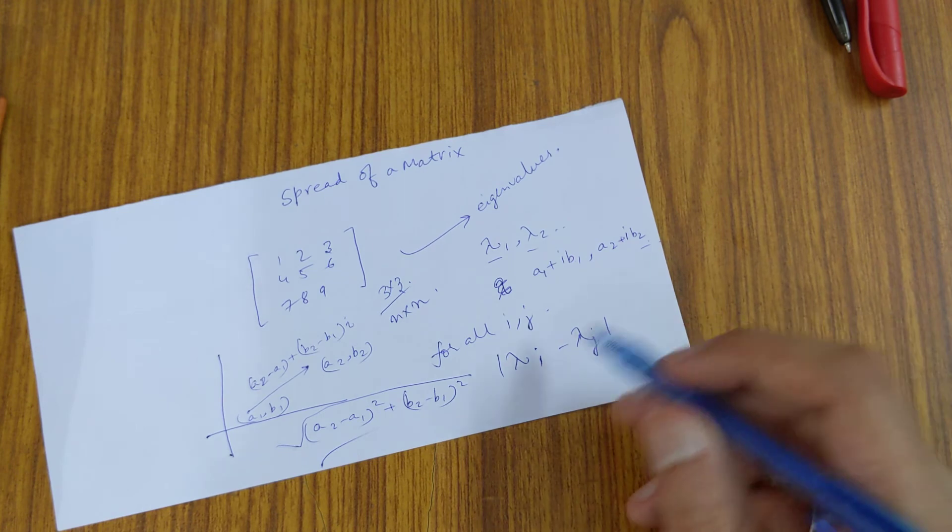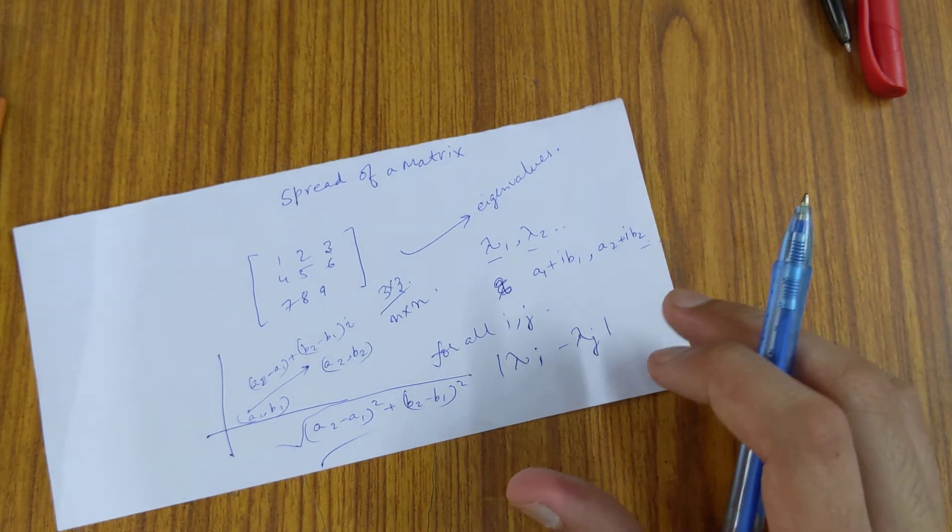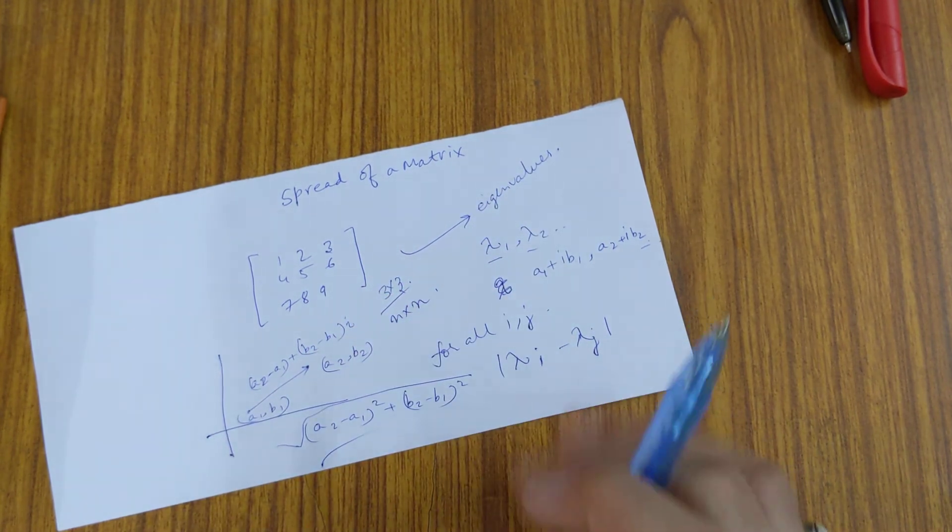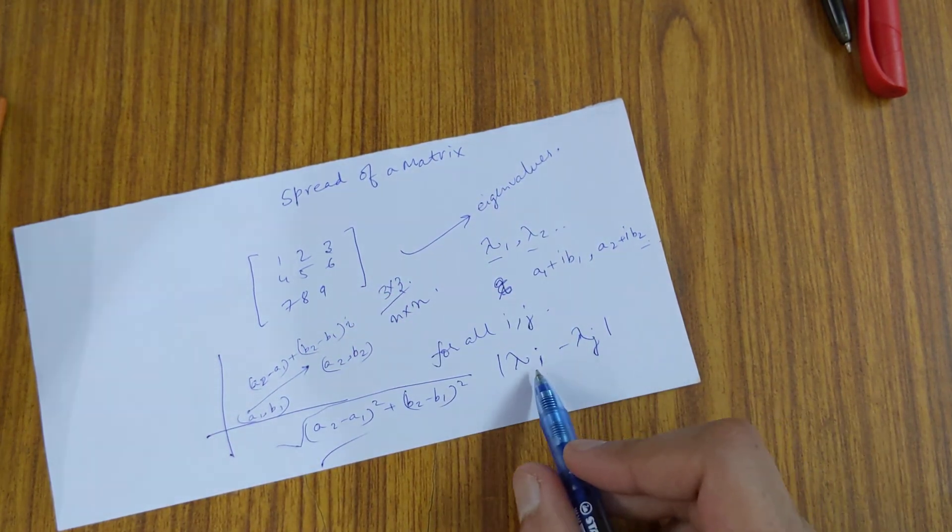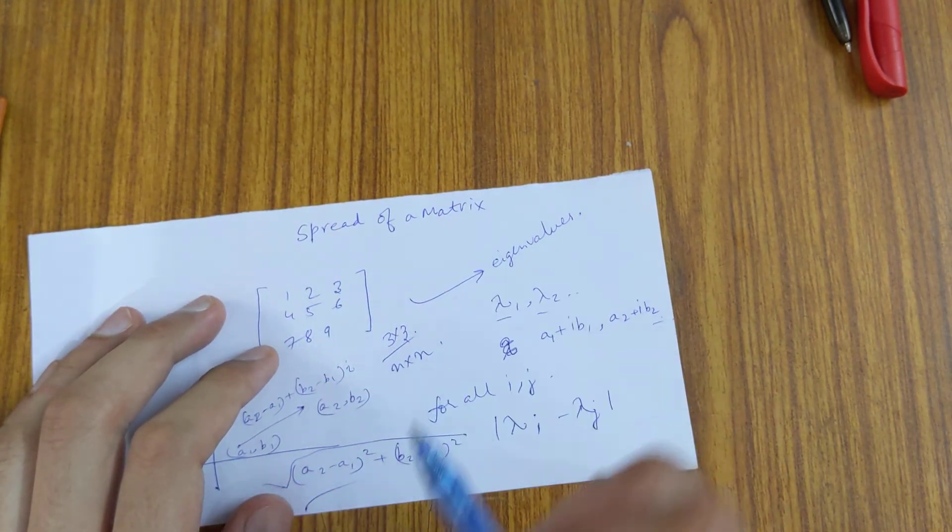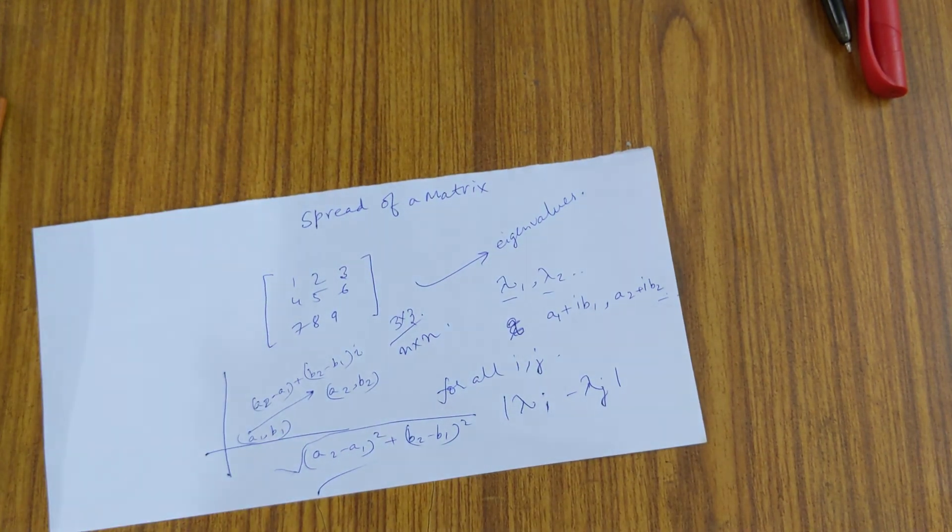And we see for which pair the distance, this magnitude of this distance, is the largest. And that will give us our spread of the matrix. Hope you understood the concept. Thank you, friends.